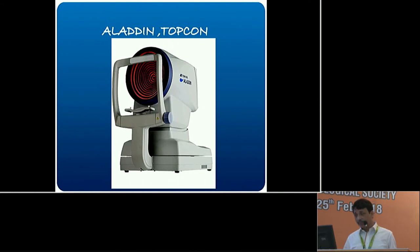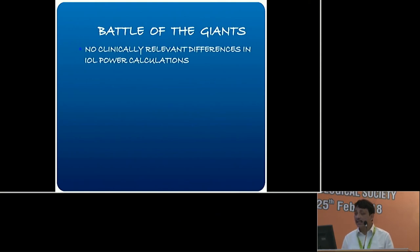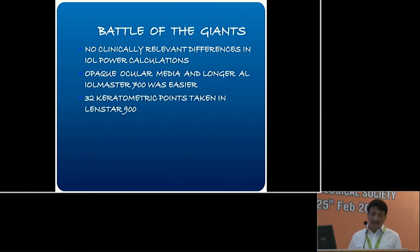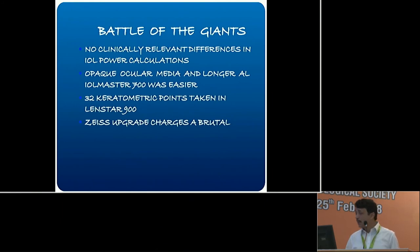The Aladdin from Topcon is also doing well — these are the top three options. Comparing the Lenstar versus the IOL Master 700, data tells us there are no clinically relevant differences in IOL power calculations — they're almost similar. But in opaque ocular media like vitreous hemorrhage, dense lens opacities, or longer axial lengths, the IOL Master 700 seems easier and faster. One main advantage of the Lenstar is that it takes 32 keratometric points in two circles for very precise keratometry. Unfortunately, the software upgrade charges are steep.